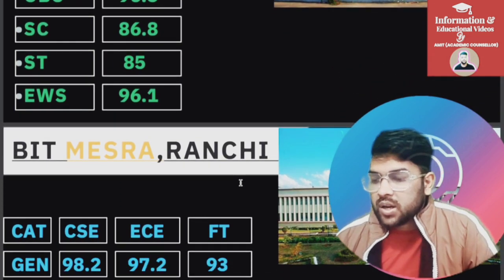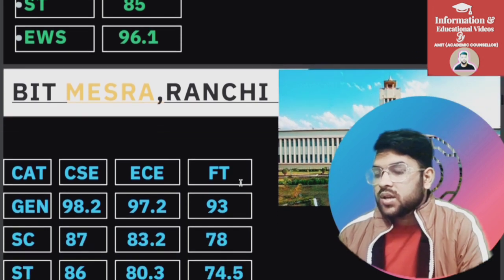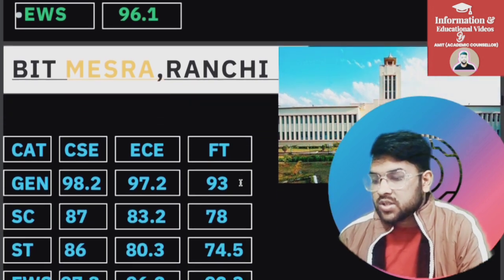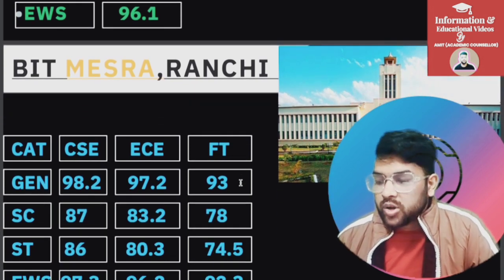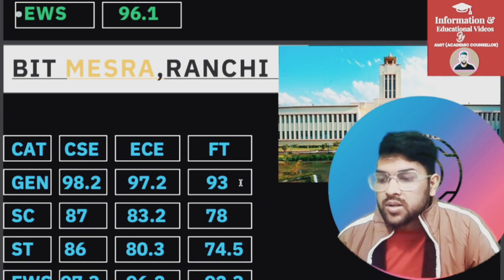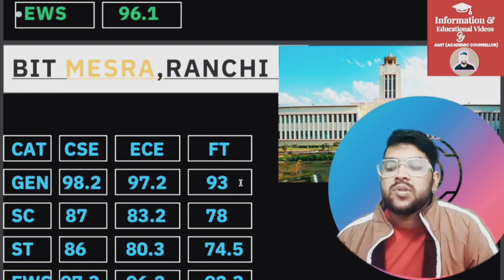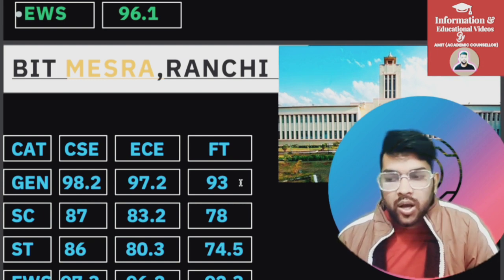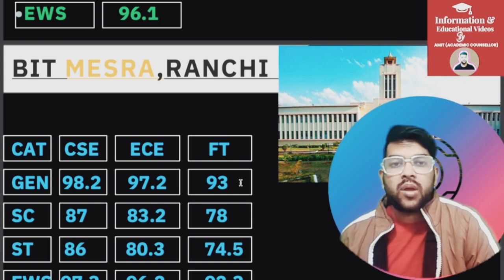For BIT Mesra Ranchi: General 98.2, SC 87, ST 86, EWS 97.3 percentile — this is for CSC. For EC and Food Technology you can check slide-wise. Food Technology is included because it represents the lowest possible branch, meaning the minimum percentile needed to enter that college.